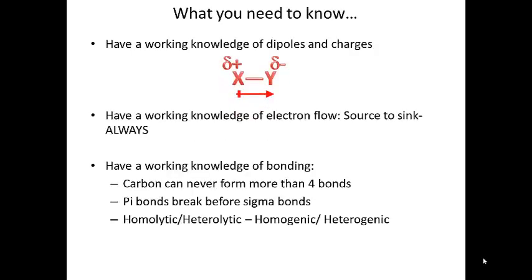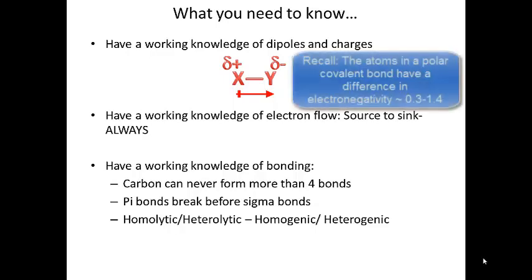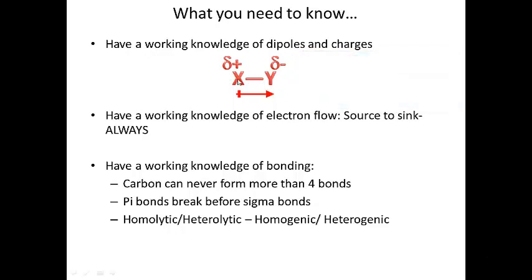So what you need to know first of all: you need to have a working knowledge of dipoles and charges, and we've talked about this at length. Basically, the bottom line is you need to be able to identify polarized bonds. How do you do that? You look for two atoms that are bonded together with an electronegativity difference of at least 0.3. When you see that, you know that bond is polarized — X is partially positive and Y is partially negative.